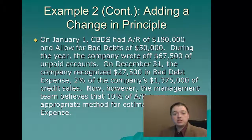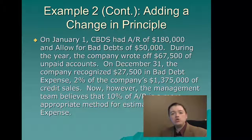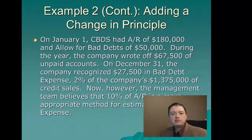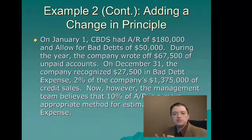They've changed from one method — percent of sales — to another — percent of accounts receivable. The formal rule with a change in method is you go back and redo your financial statements as if you'd used this new method all year long. If you're reporting this year's numbers and last year's numbers, or even two years of historical numbers, you change everything using the new method, so your investors looking at two or three years of data can see what it looks like under the new method. That's the formal rule.